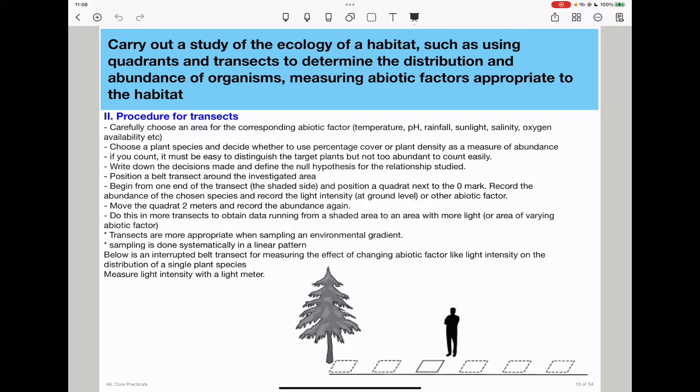If it's plant density, you count the specific organisms within specific quadrats placed along specific transects. If you choose counting as your method, you have to find organisms that are easy to distinguish. It should be easy to distinguish the target, but not too abundant to make it hard for you to count. You need to write down the decisions made and define the null hypothesis for the relationship that is being studied.